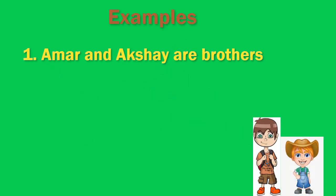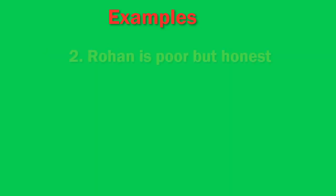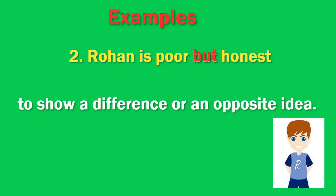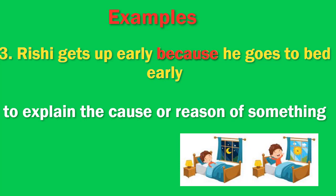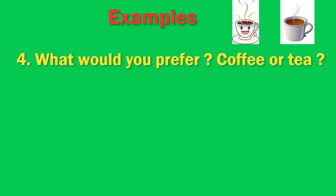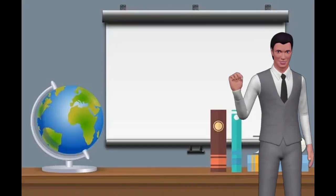Look at these examples. 'Amar and Akshay are brothers.' We use the word 'and' to combine similar ideas or to add information. 'Rohan is poor but honest.' We use the word 'but' to show a difference or an opposite idea. 'Rishik gets up early because he goes to bed early.' We use the word 'because' to explain the cause or reason of something. 'What would you prefer? Coffee or tea?' We use the word 'or' to show a choice between two or more options.